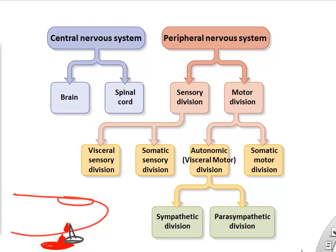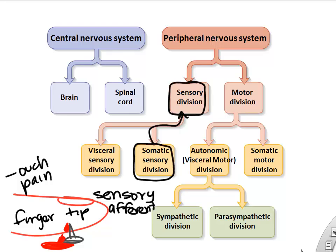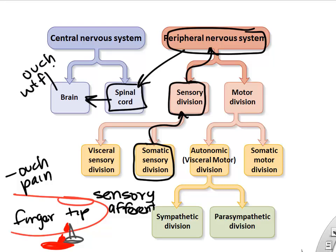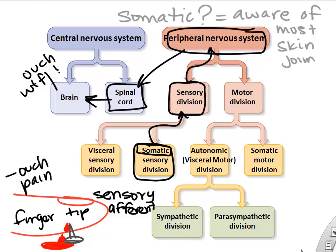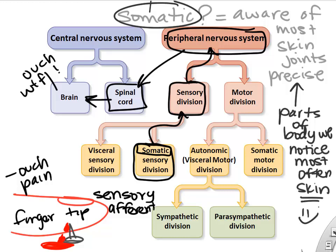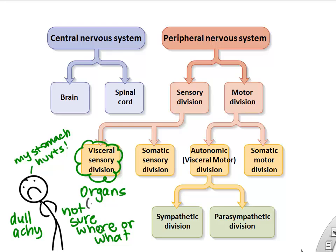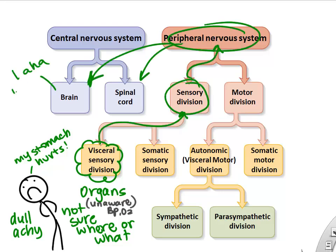If you stick your finger on something sharp, you create afferent signals through the sensory division up to the spinal cord or brain — we call this the somatic sensory division. Somatic refers to things you're aware of in your body, mainly your skin and joints. If you feel an achy sensation in your stomach but aren't sure exactly where it's coming from, we call that visceral sensory information — it goes up to the brain but you don't get that information all the time.